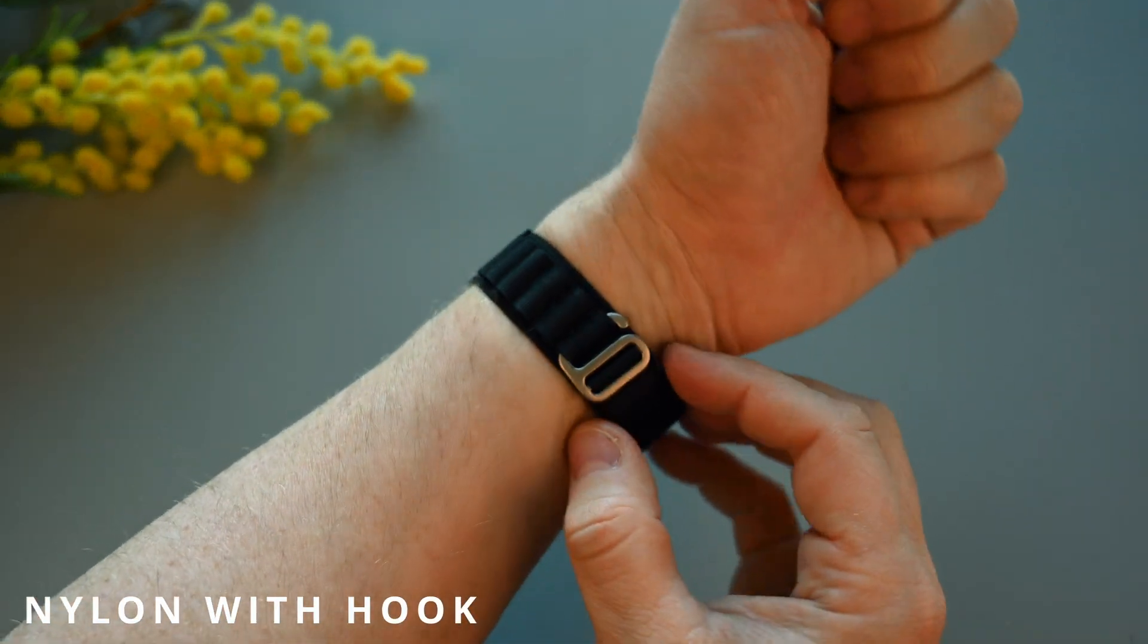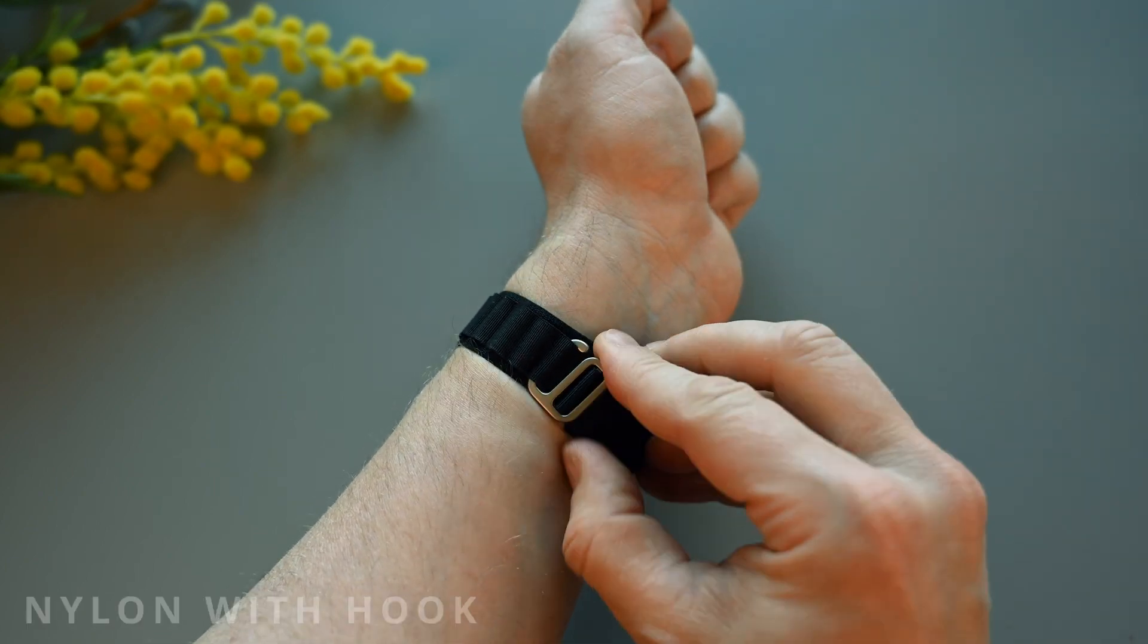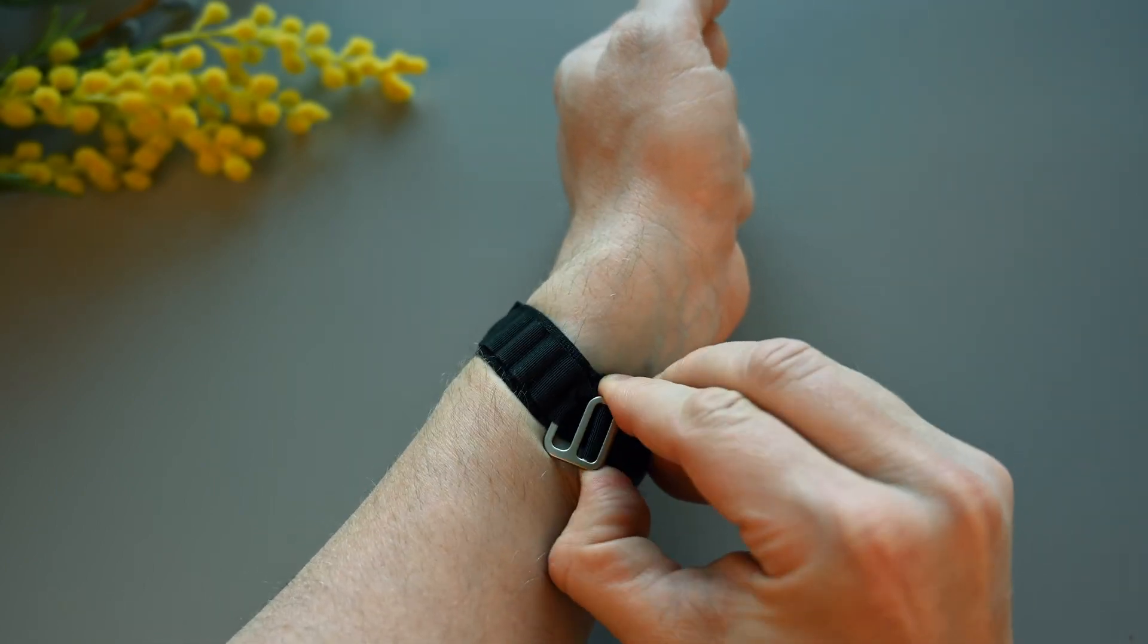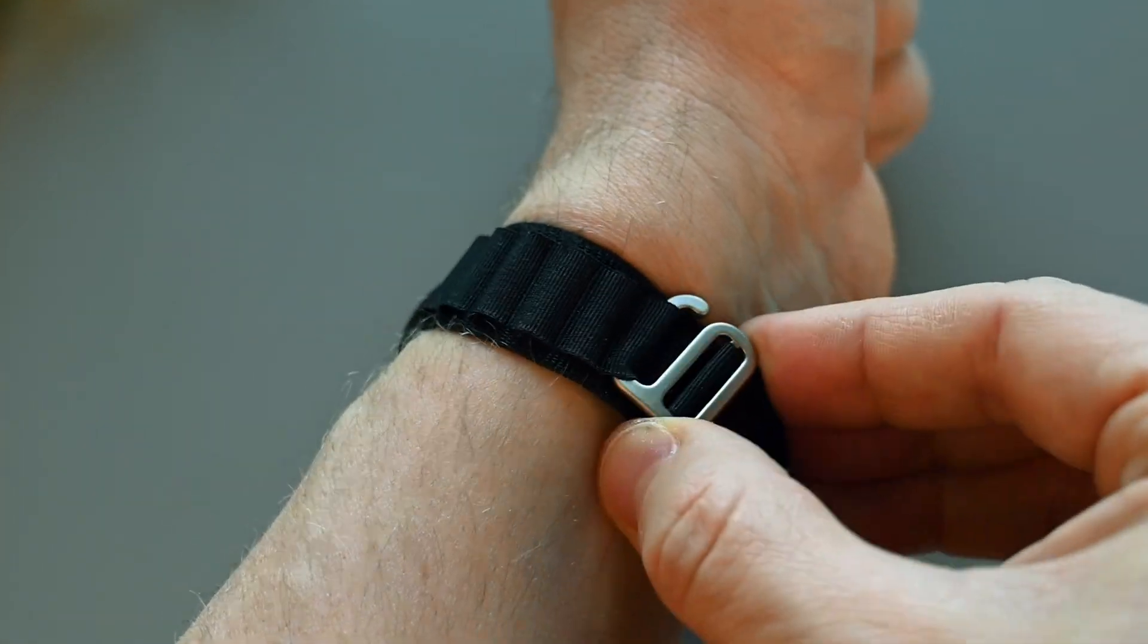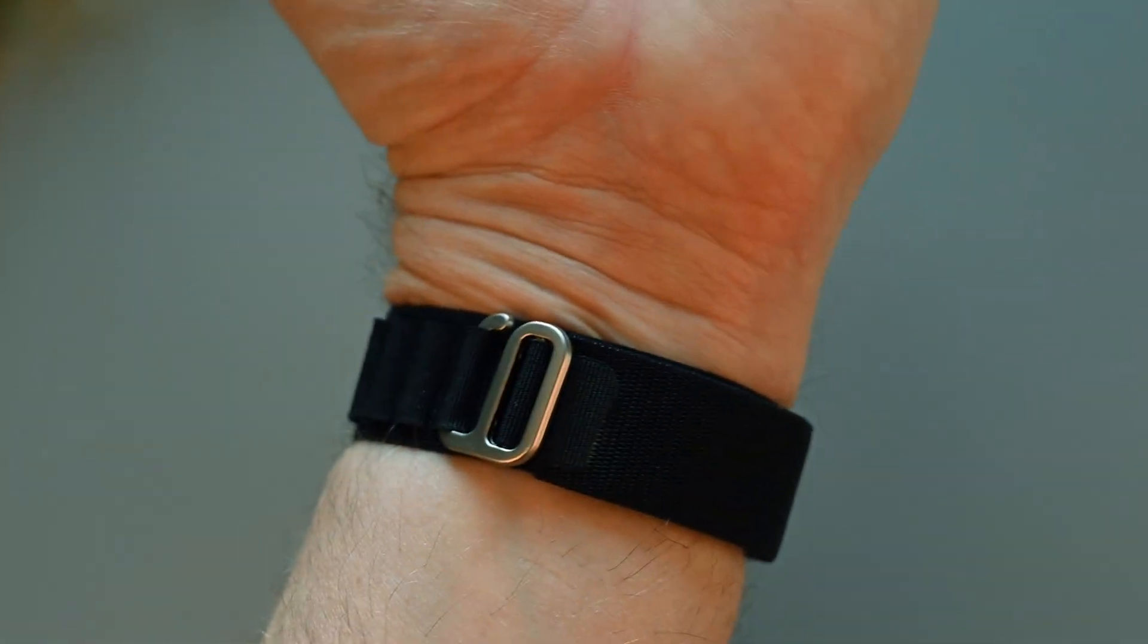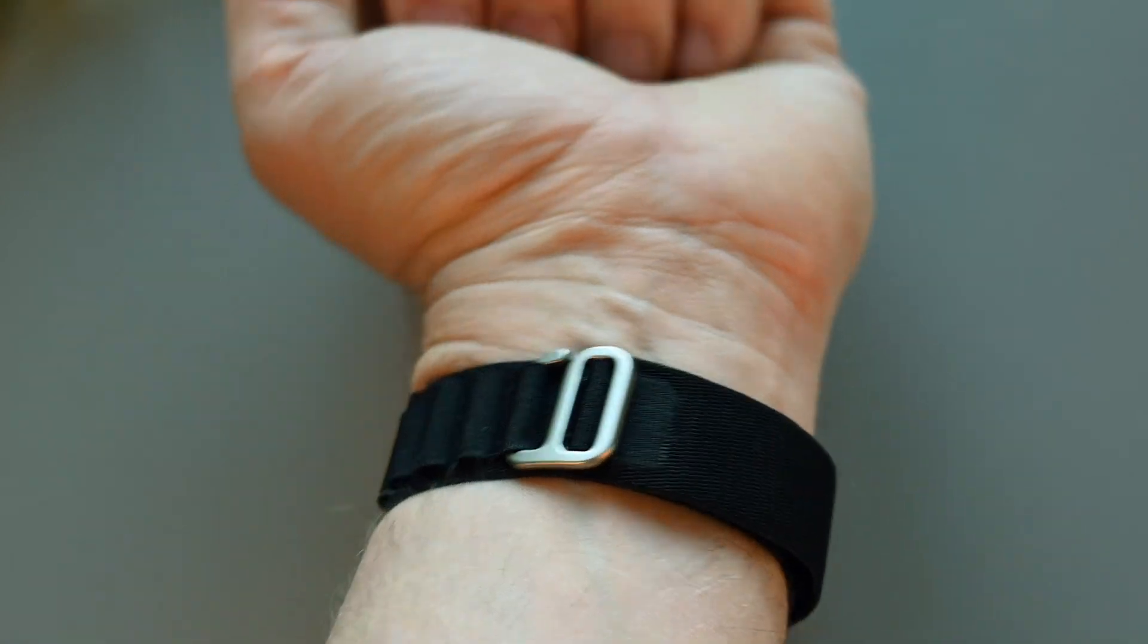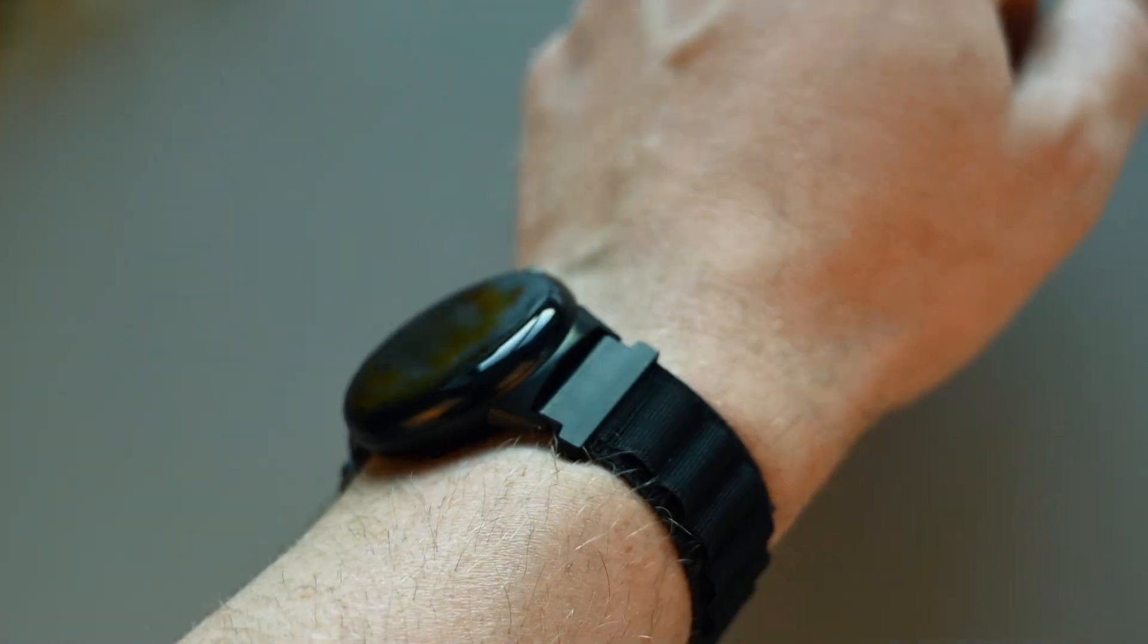Moving on to the next bands, and this one is made of nylon. Here's a loop system instead of a buckle, and metal hook to lock it in place. The width of these bands are 21mm. They're thinner than I thought they would be, but they look interesting, and ok I guess.